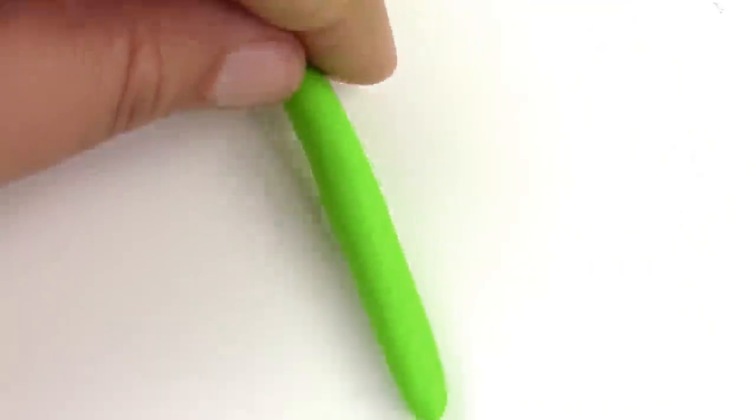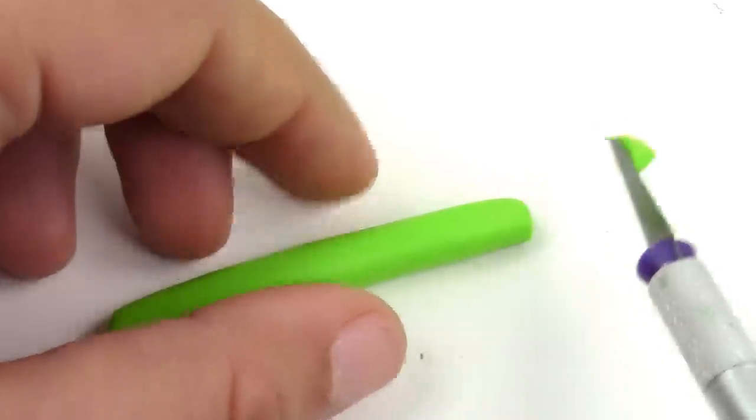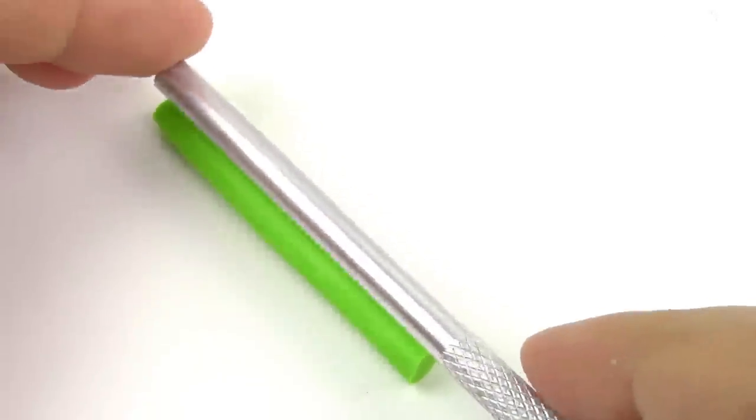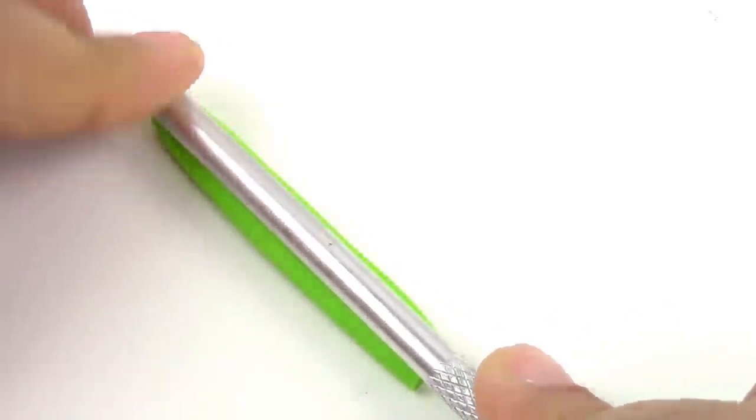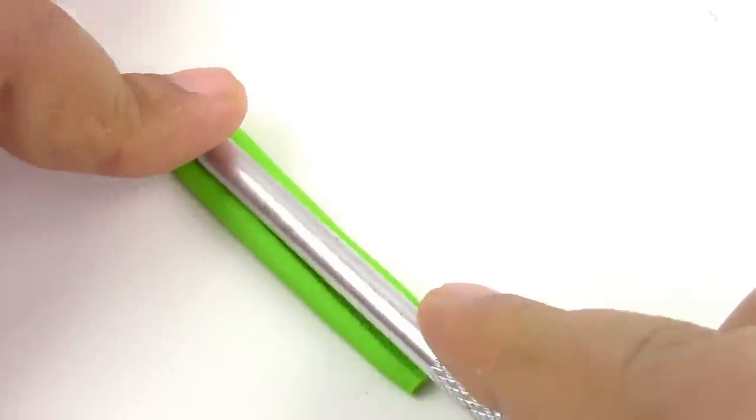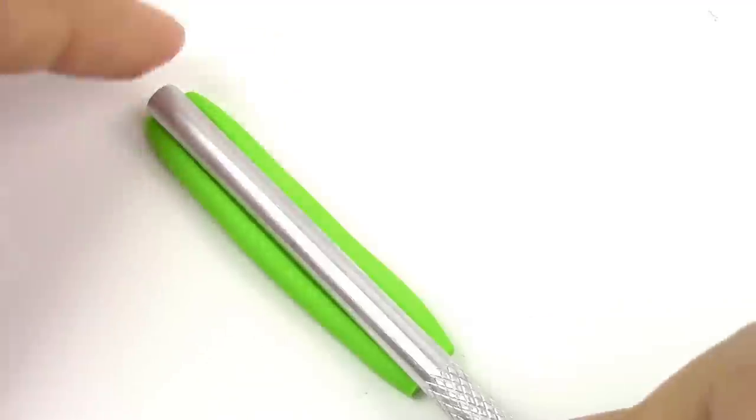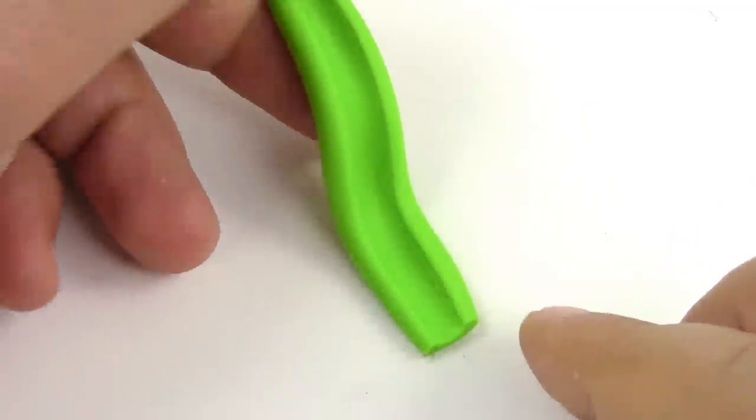Now let's make the green slide. And it's pretty simple. Just roll a piece and you're going to push a tool right down the middle. And we want it to have this shape.